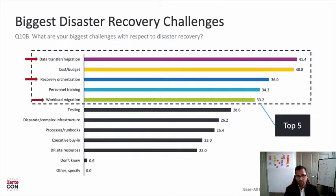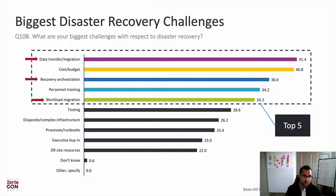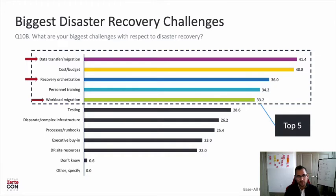The top five DR challenges were: data transfer and migration, cost and budget of disaster recovery, orchestration, training, and migration. People are having issues with having the right personnel and technical capabilities, being able to migrate workloads, having the right workflows, and managing cost. A close sixth was testing — organizations are having a massive challenge performing effective failover testing. This is where it becomes interesting because many organizations are now moving towards the cloud for disaster recovery.